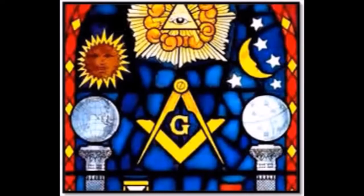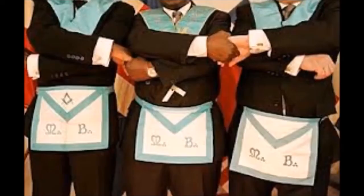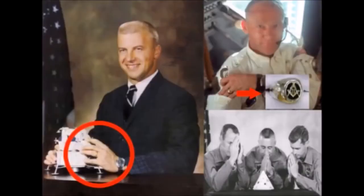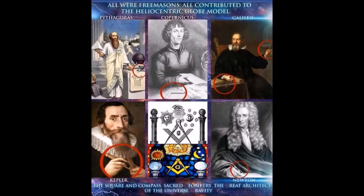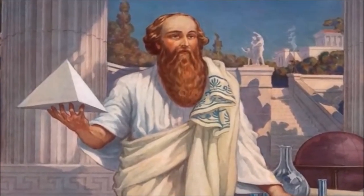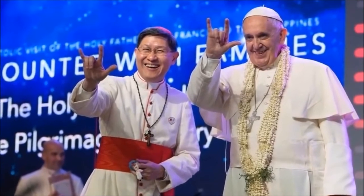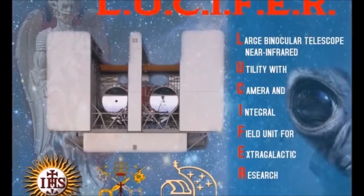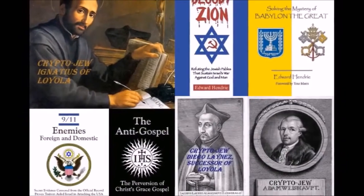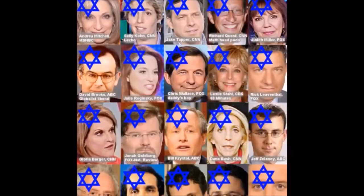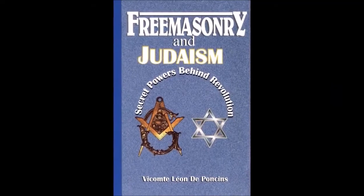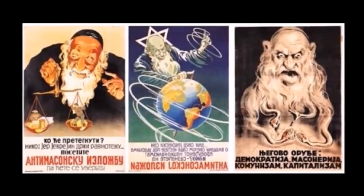Freemasonry is the world's largest and oldest secret society, with up to 5 million members across the plane. NASA is full of Freemasons and run by them, and most heliocentric scientists throughout history were Freemasons — such as Newton, Galileo, Copernicus, and even Pythagoras was touted as one of the first Freemasons. The Jesuits and the Vatican own and fund almost every major telescope in the world, including one they call Lucifer. The Jesuits are also connected to Judaism, and Zionist Jews have control over banks, industries, and corporations. Even Freemasonry is shown to have been created by Judaism.